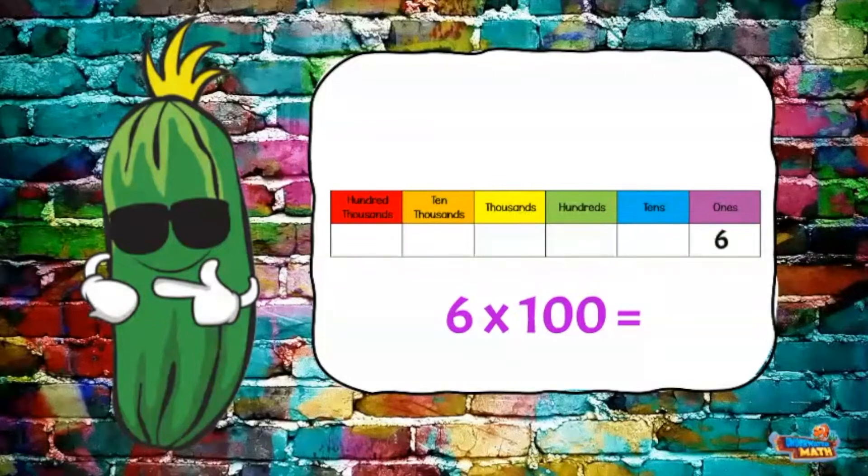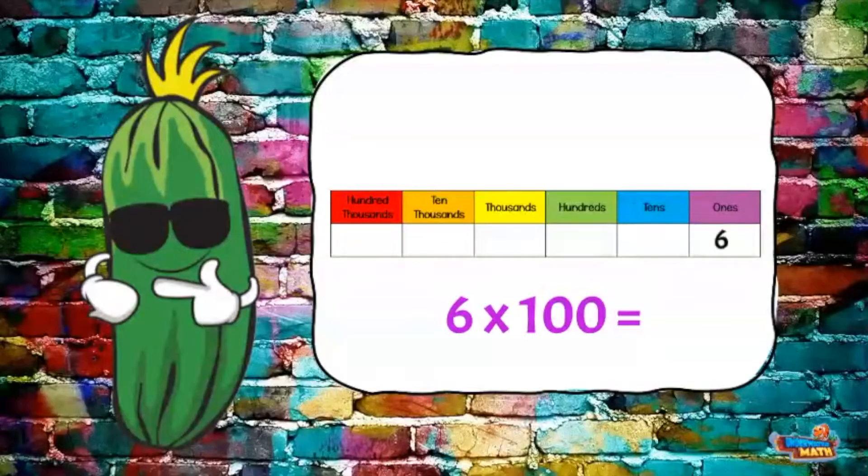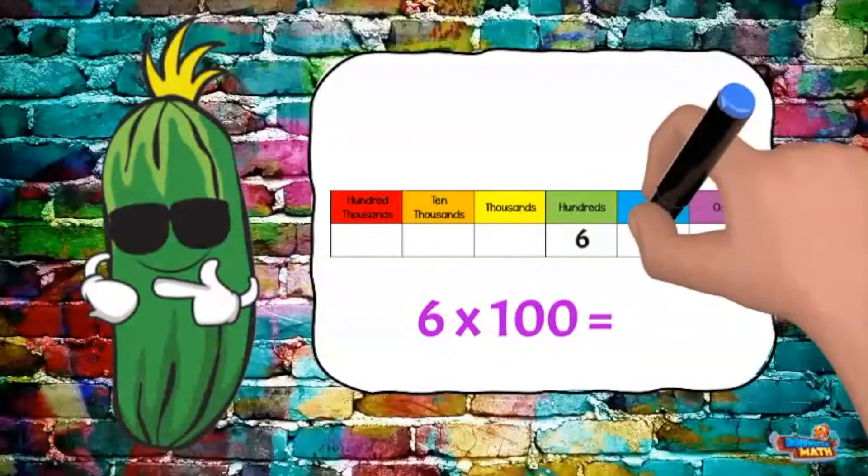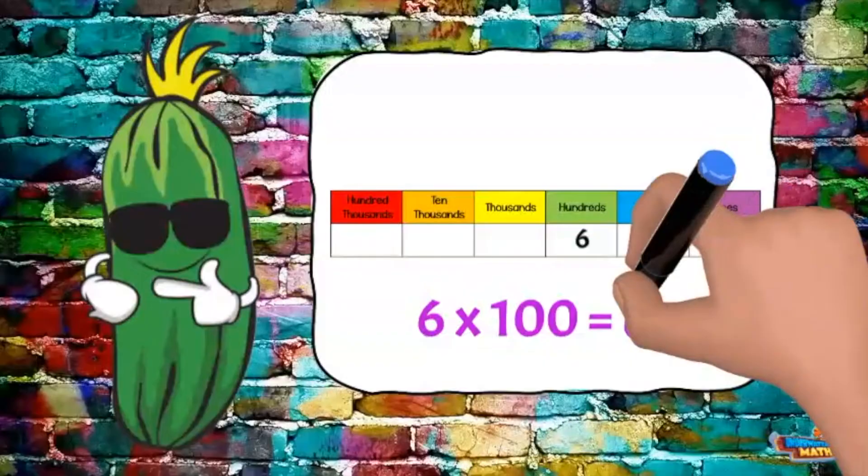What if we multiply 6 times 100? The expression is telling me I have 6 hundreds. The number 100 also has two zeros. This means I can move the 6 to the left two times and fill in the empty place values to the right for an answer of 600.